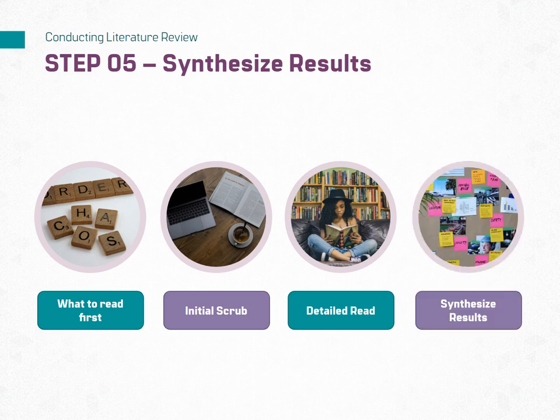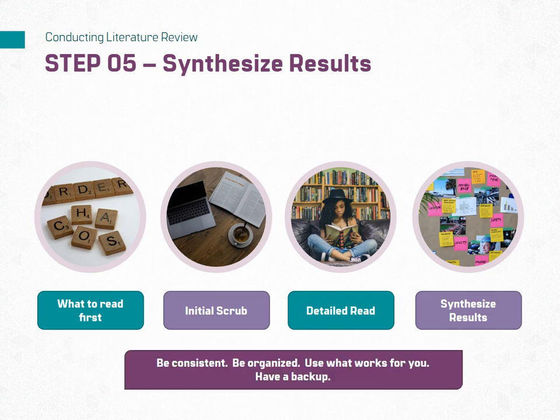Synthesizing your results involves taking the main themes you found and organizing your assessment of the literature. There are various methods you can use for this, such as creating tables in Word or Excel, utilizing the notes section within your reference manager, or even using tools like OneNote or EndNote. The most important aspect of synthesizing your results is to be consistent in the method you choose and organized in its application. This will make it easier for you to locate information when you need it. Remember, the best method or tool is the one that is the easiest for you to use and meets your specific needs.